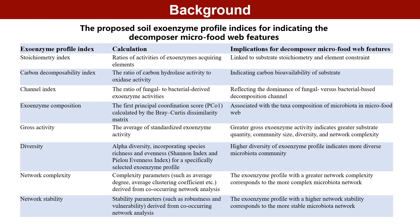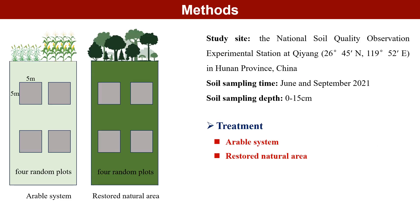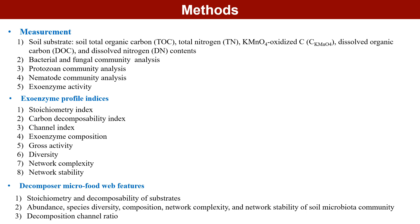Here, we propose eight soil enzyme profile indices for indicating the micro-food web features. Our study was located at the national soil quality observation experimental station at Qiyang in Hunan province, China. In this study, we chose two treatments: an arable cropland and a restored natural area. We measured the soil substrate, bacterial and fungal community, protist community, nematode community, and enzyme activity. These are the eight enzyme profile indices, and we also calculated the decomposer micro-food web features.